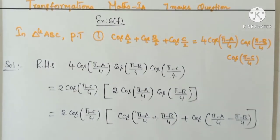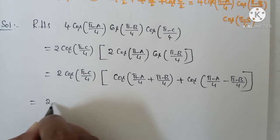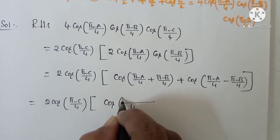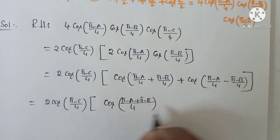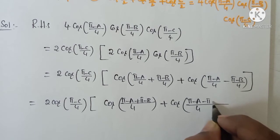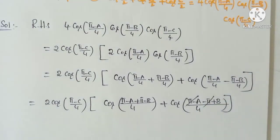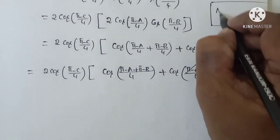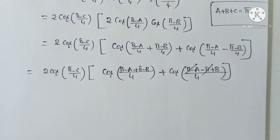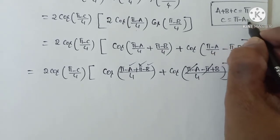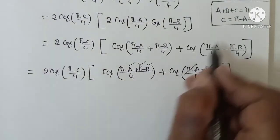So applying the product-to-sum formula: 2 cos((π−A)/4) · [cos((π−A+π−B)/4) + cos((π−A−(π−B))/4)]. The LCM gives us π−A−π+B terms; cancel +π and −π. The given condition in triangle ABC is A + B + C = π, so C = π − A − B.